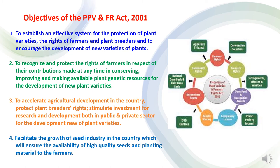The objectives of the Protection of Plant Varieties and Farmers Rights Act 2001 are: first, to establish an effective system for the protection of plant varieties, the rights of farmers and plant breeders, and to encourage the development of new varieties of plants. Second, to recognize and protect the rights of farmers in respect of their contributions made at any time in conserving, improving and making available plant genetic resources for the development of new plant varieties. Third, to accelerate agriculture development in the country, protect plant breeders' rights, and stimulate investment for research and development — both in public and private sector — for the development of new plant varieties. Fourth, to facilitate the growth of the seed industry in the country, which will ensure the availability of high quality seeds and planting material to the farmers.